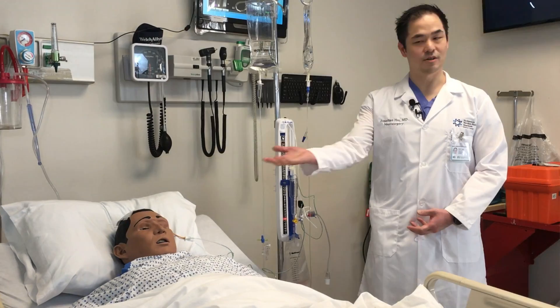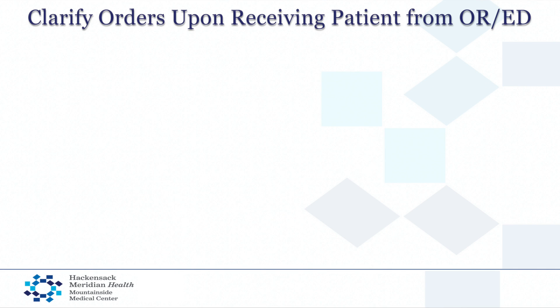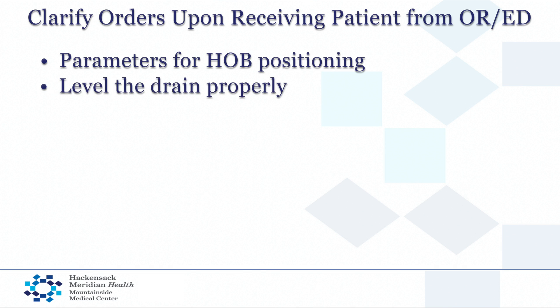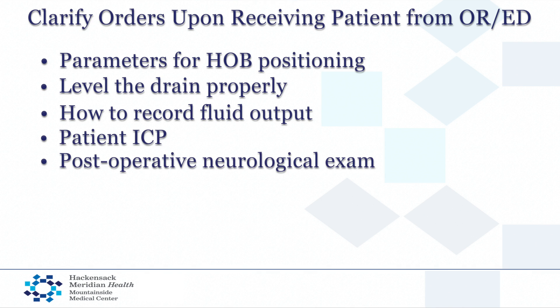When you receive a patient with an external ventricular drain, it will commonly be directly from the operating room or during your change of shift. One of the most important things is to communicate with the nurses who had been taking care of the patient before and clarifying the orders that should be in place. These orders include very specific parameters for head of bed positioning, how to level the drain, how to record how much fluid is coming out, what the ICPs have been as another vital sign, and most importantly what the patient's neurological exam was.